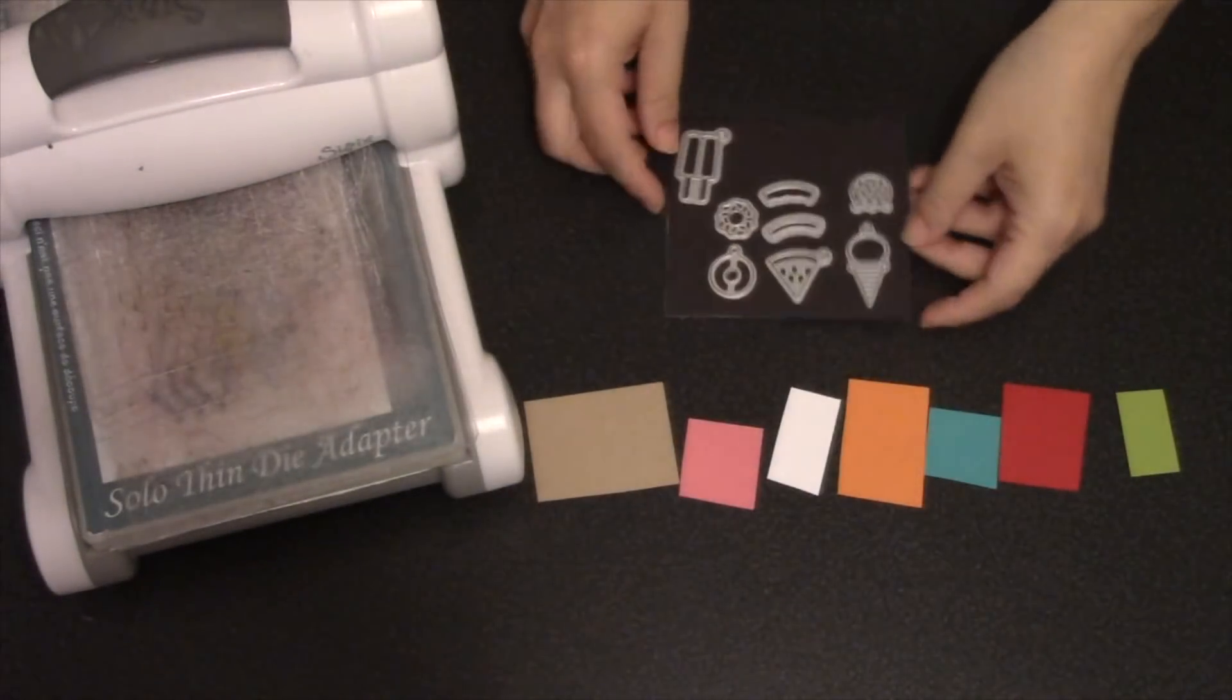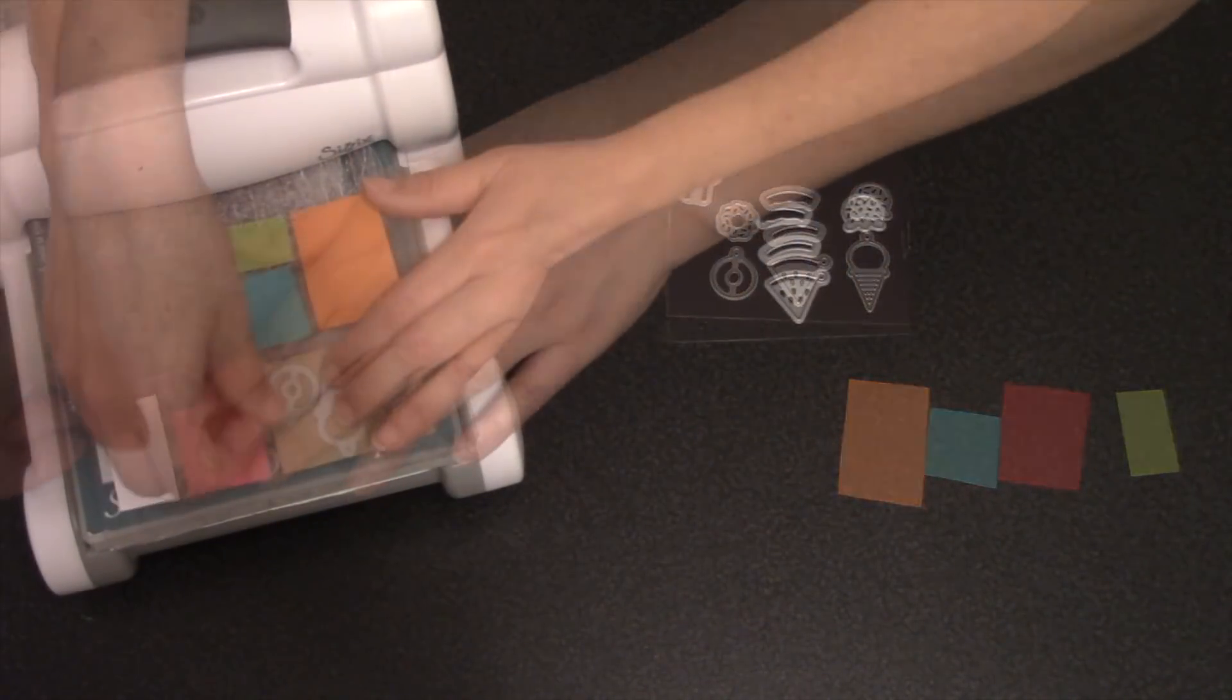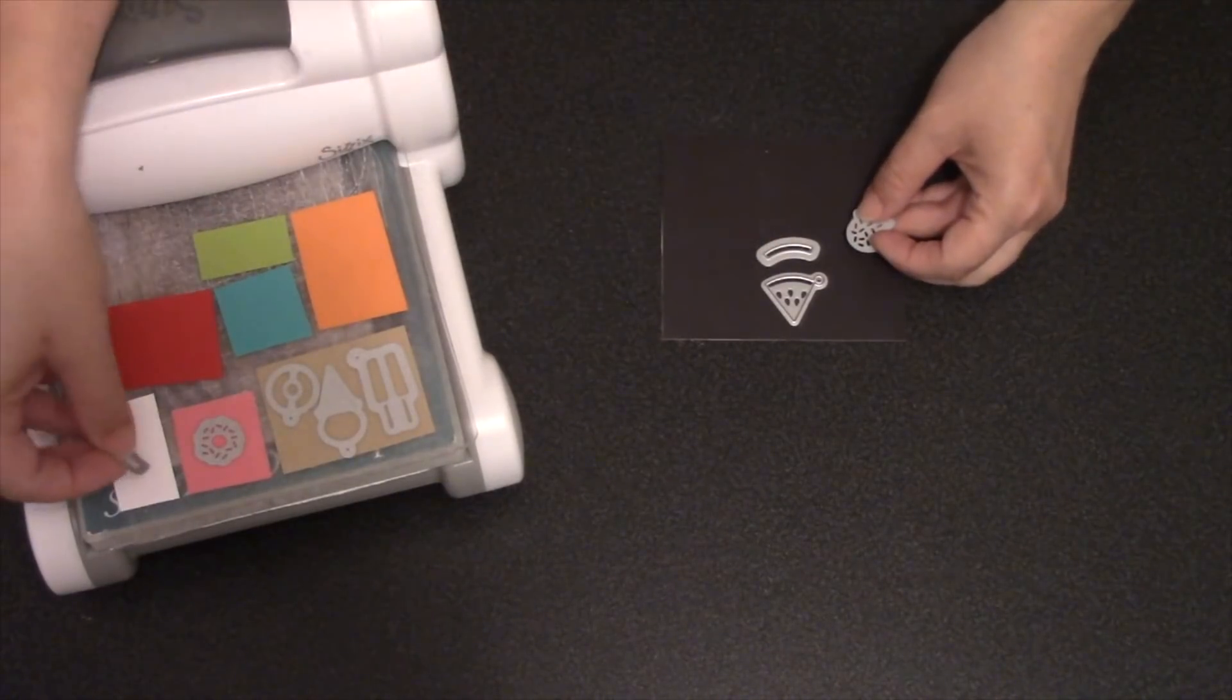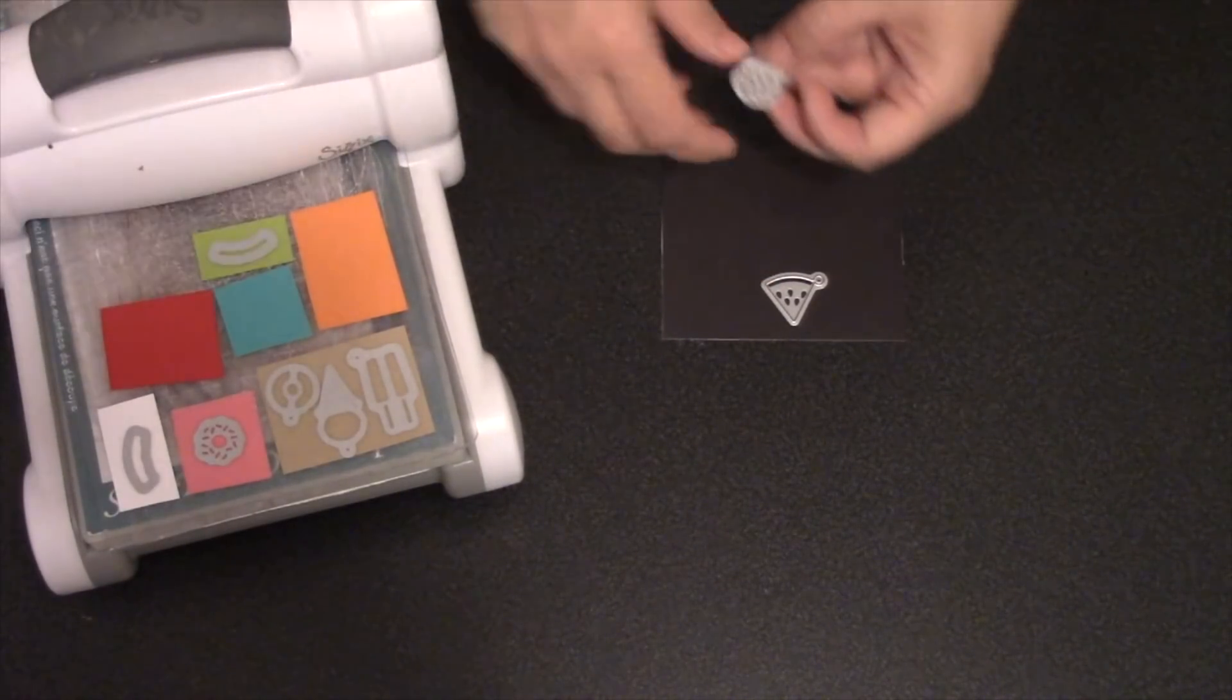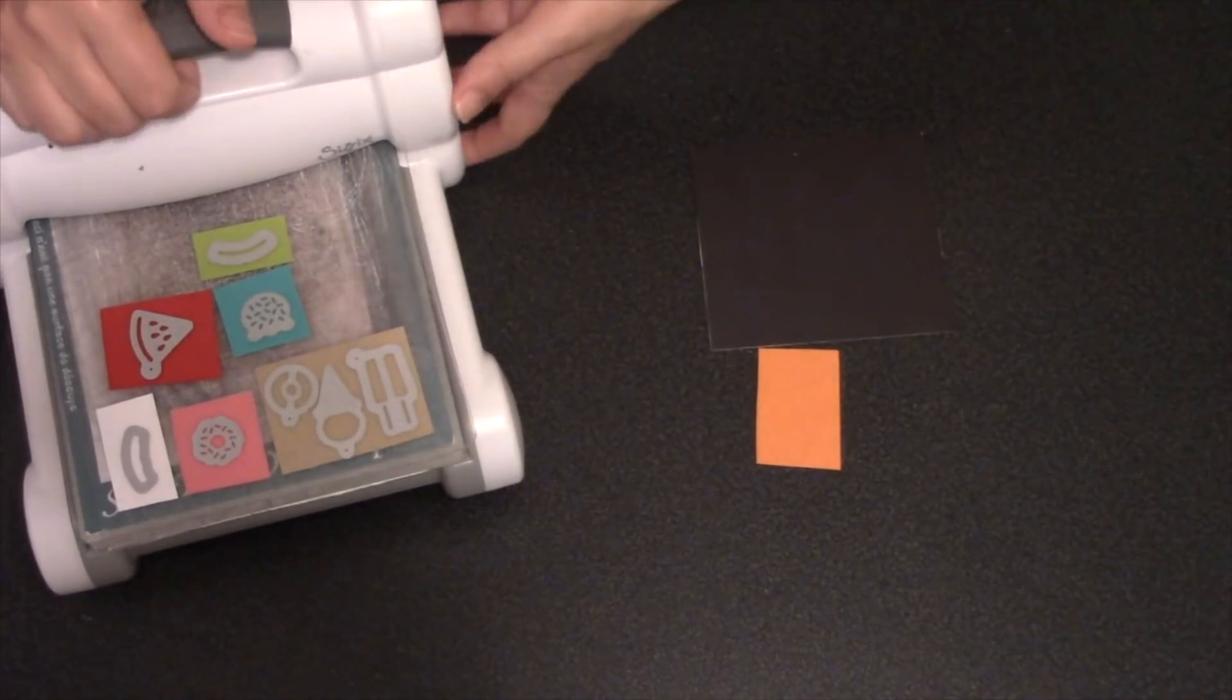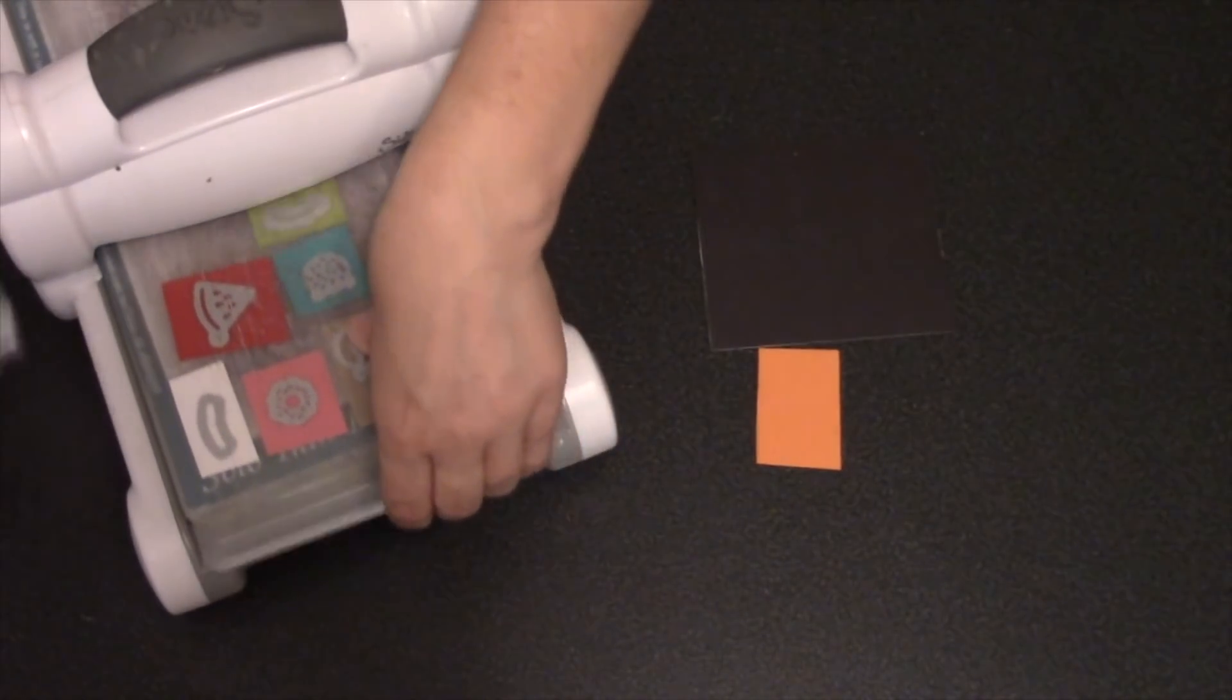There are eight individual dies in the set, and these are a great use of all of your scraps. So I like to cut everything at one time. I will have to run back through for the popsicle because I need two of them, but other than that I can cut everything at the same time. Any die cutting machine that can accommodate a wafer thin die will work with these dies, and I am using a Sizzix Big Shot today.